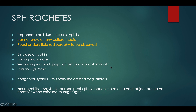Tertiary syphilis: the lesion is called the gumma. Other types include congenital syphilis — the baby gets it vertically from a mother who has syphilis. Clinical features include mulberry molars when the molars erupt, and peg laterals. Neurosyphilis: remember Argyll Robertson pupils, though this is not much tested. That was the end of the bacterium slides.